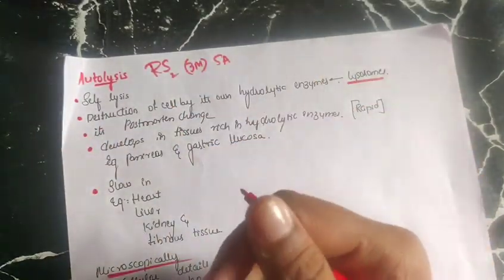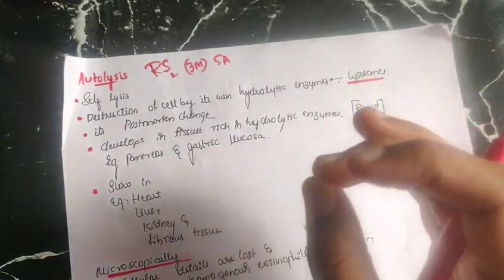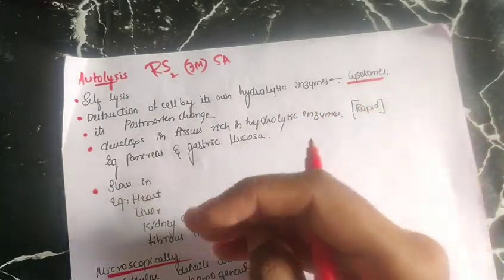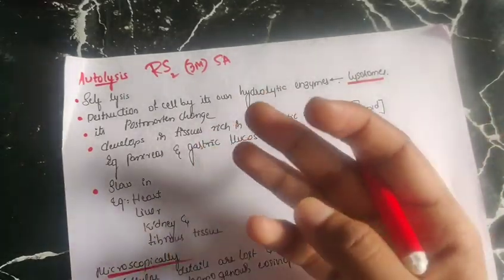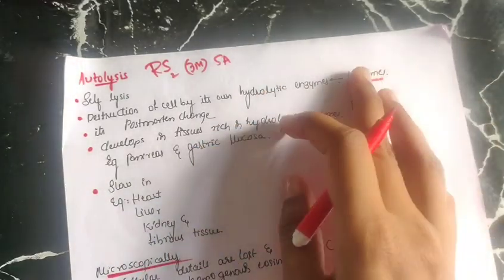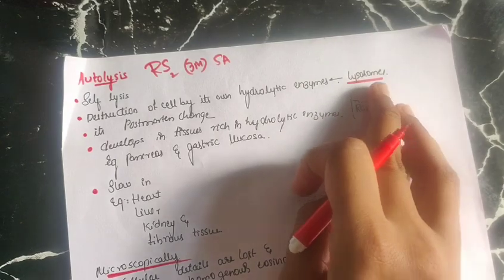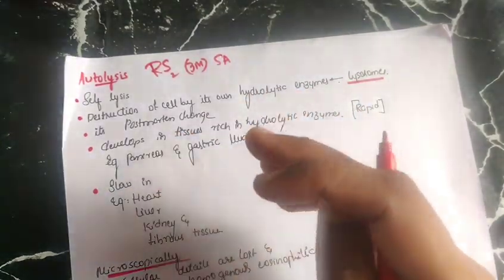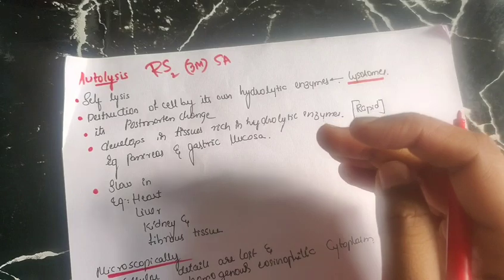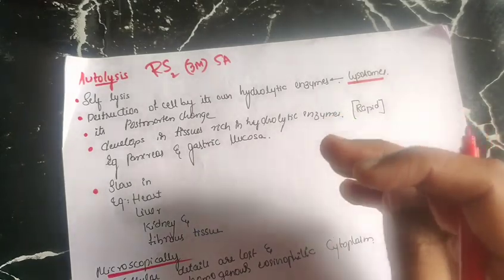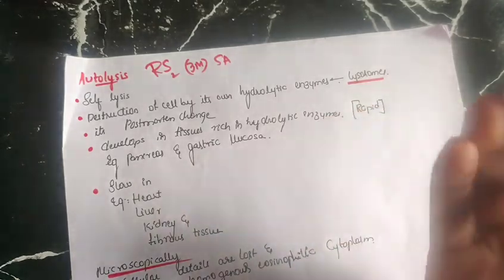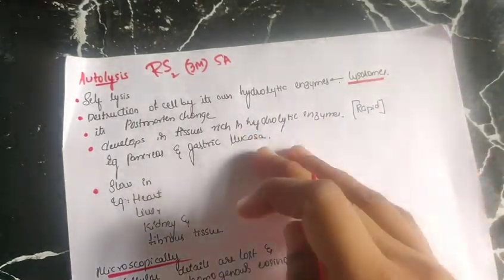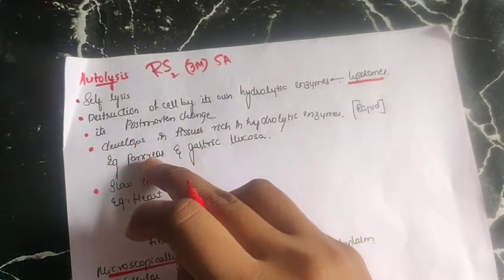Autolysis usually appears as a post-mortem change — after death, autolysis occurs by leakage of enzymes from the lysosomes. It develops predominantly in tissues that are rich in hydrolytic enzymes.